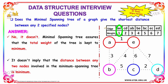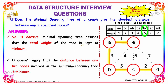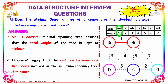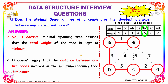The next question is: does the minimal spanning tree of a graph give the shortest distance between any two specified nodes? The answer is no, it doesn't. Minimal spanning tree assures that the total weight of the tree is kept minimum. It doesn't imply that the distance between any nodes involved in the minimum spanning tree is minimum — weight has to be kept minimum. These types of questions are asked in interviews at Wipro and Verizon.